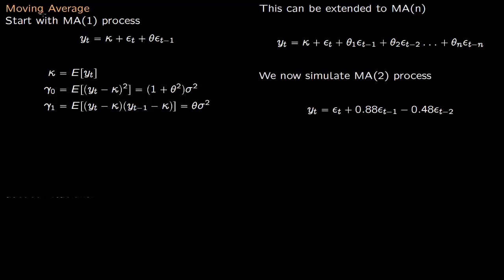Now we talk about a moving average process. This is MA(1), that is moving average 1. There is a lag of 1.